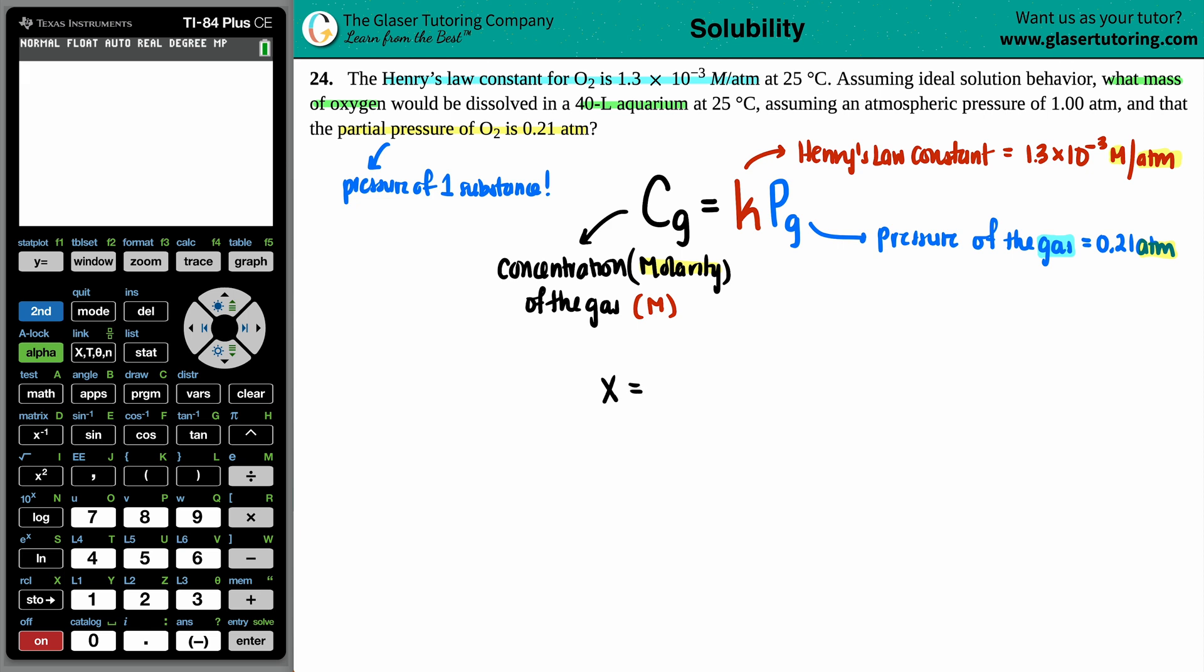X equals the Henry's law constant, 1.3 times 10 to the negative third, times the partial pressure of the O2, which was 0.21. Okay, so that's the first thing. 1.3 times 10 to the negative three times 0.21. And I get 2.73 times 10 to the negative fourth. And that is molarity. Molarity of who? Specifically of the gas, which is O2.